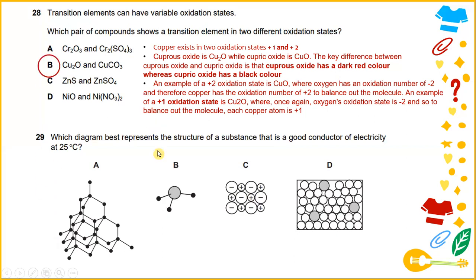Which diagram best represents the structure of a substance that is a good conductor of electricity at 25 degrees Celsius? The answer will be D.